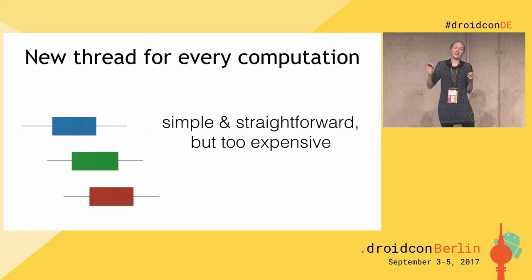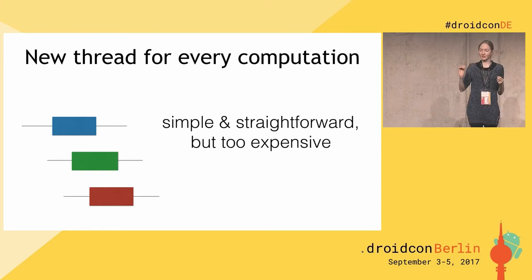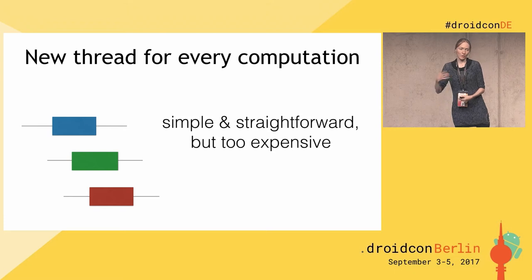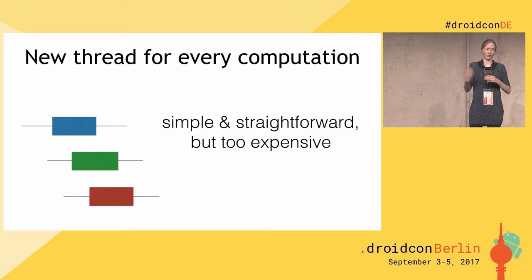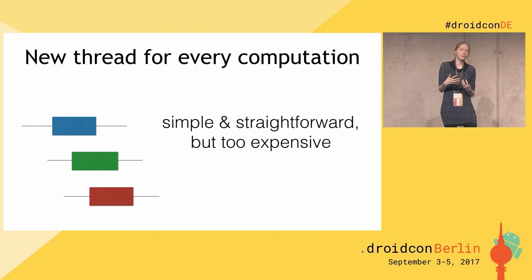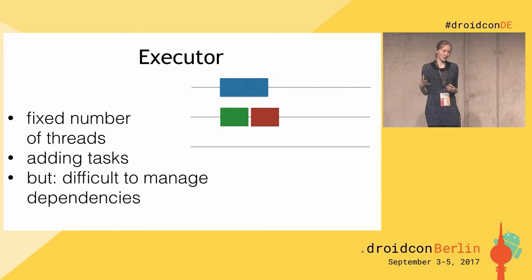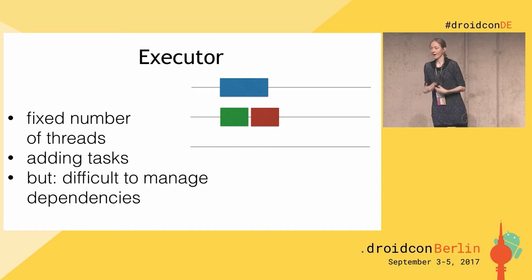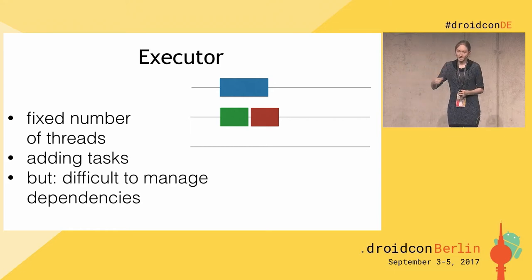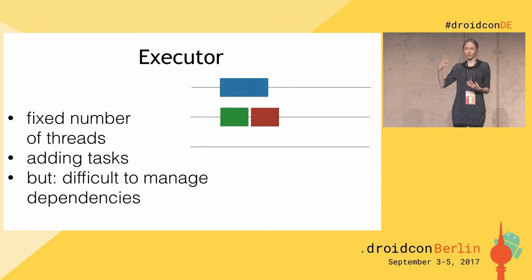To answer why we need suspension, let's discuss how we can, in general, do asynchronous computations. A naive approach would be to start a new thread for every new computation. This works, it's simple and straightforward, but it's too expensive — you just cannot create a thread all the time. In general, we as developers would like to reuse threads. An executor helps here: it represents a fixed number of threads where we can add our computations so that threads are reused. The only difficulty is managing dependencies between computations.